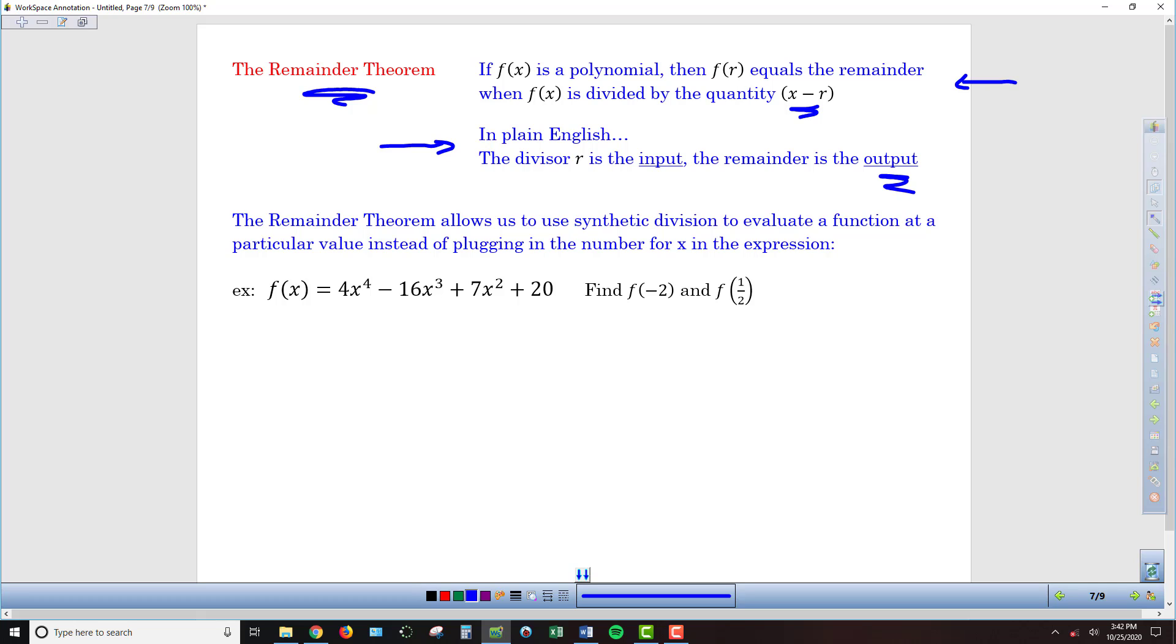For example, if we look at the example here, we want to find what f of negative 2 is for this function, f(x). So what I would have to do is plug in negative 2 for x where I see it here, here, here. I'd have to raise it to the fourth power,